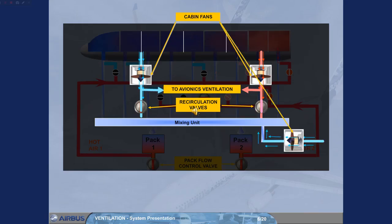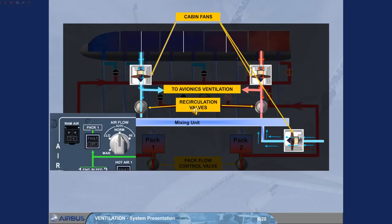On the A340-600, a third cabin fan blows air to the mixing unit. All cabin fans run at a variable speed according to air management system demand, except when the airflow selector is set to manual.